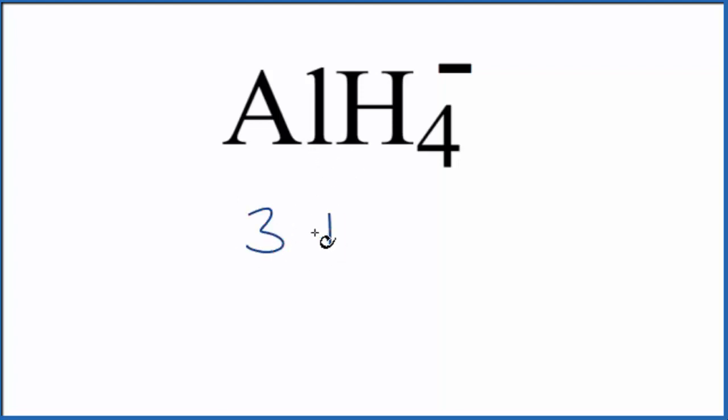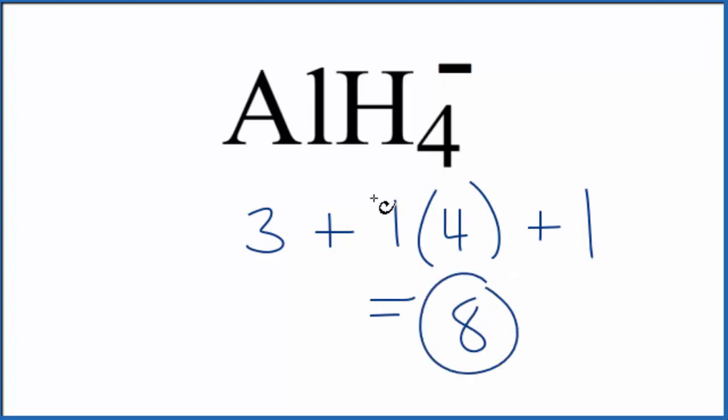So that has three valence electrons. Hydrogen is in group one. We have four hydrogen atoms. And this negative sign means we have an extra valence electron there. We need to add that. Add all those up, we get eight total valence electrons for AlH4 minus.